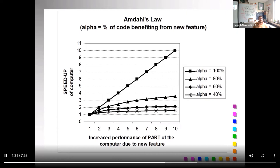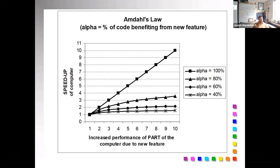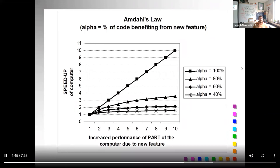When we look at a graph of this, we see where you have a percentage of code benefiting from a new feature. You see the speed up of the computer on the y-axis and the increase in performance of part of the computer doing the new feature on the x-axis. You have different curves. The first curve is 100% speed up. You can see that you do twice as much speed for a linear curve, 45 degree angle, is the maximum that you can get. But then you get a curve that drops off more and more if you have a smaller part of the code that actually benefits, as you would expect.